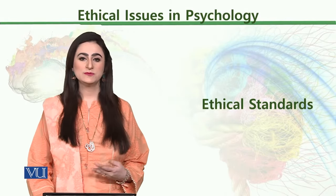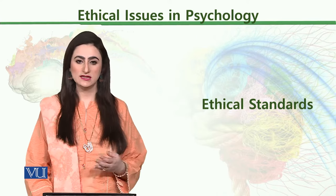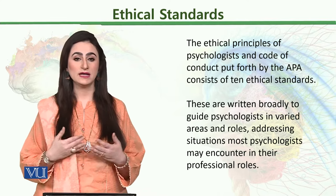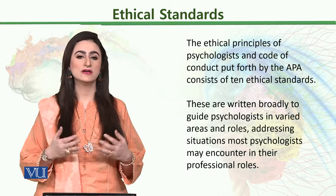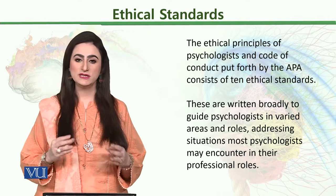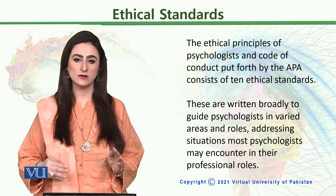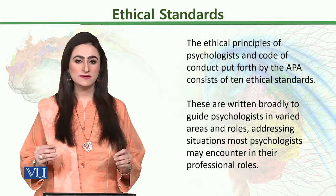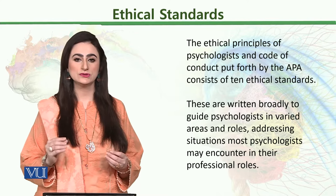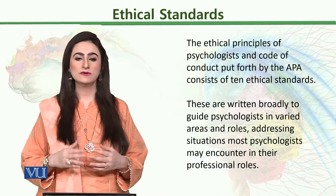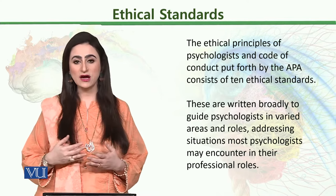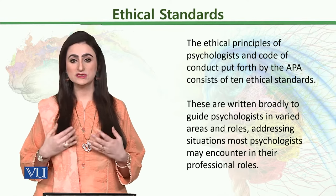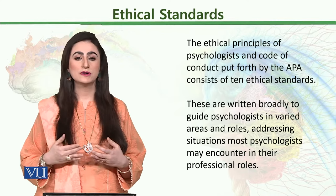The ethical principles we have been talking about lead towards certain ethical standards. The ethical principles of psychologists and code of conduct put forward by the American Psychological Association consists of 10 ethical standards. The 5 principles which we have talked about further break down into 10 ethical standards. These are written broadly to guide psychologists in varied areas and roles, addressing situations most psychologists may encounter in their professional lives, but not all.